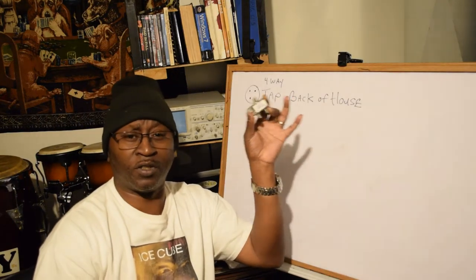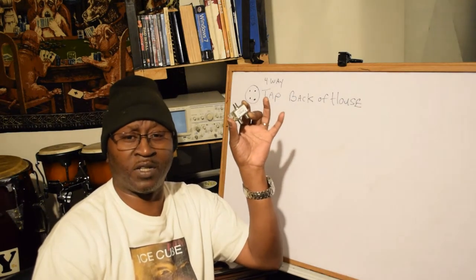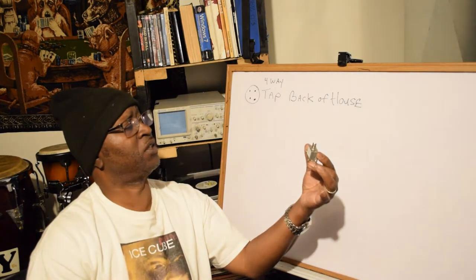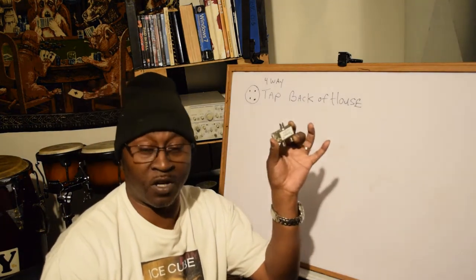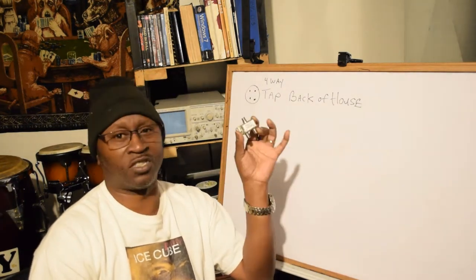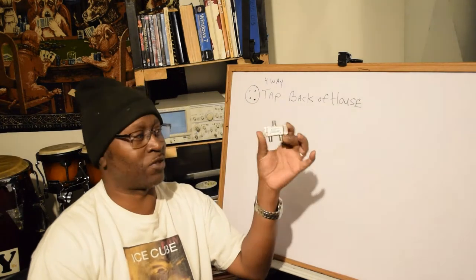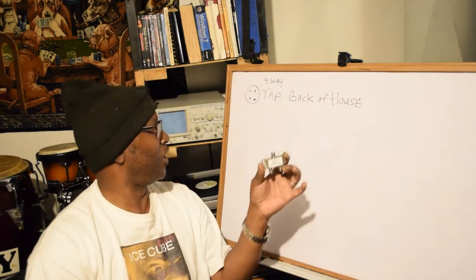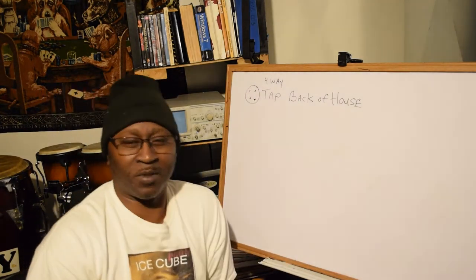See this splitter here? This is a 3.5 loss splitter. This is the old school one. I was installing this when I was in the field, and a four-way tap, it's kind of like the same thing.